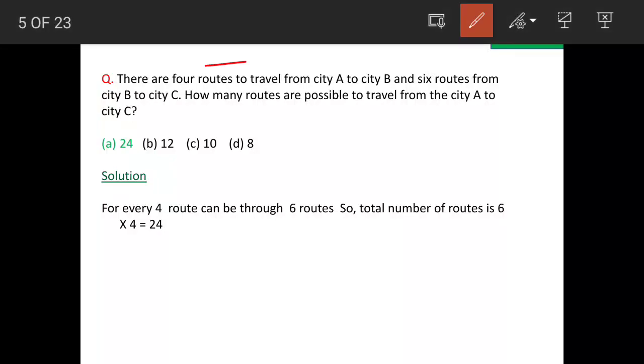There are 4 routes to travel from city A to city B and 6 routes from city B to C. So, how many routes are possible to travel from city A to city C?